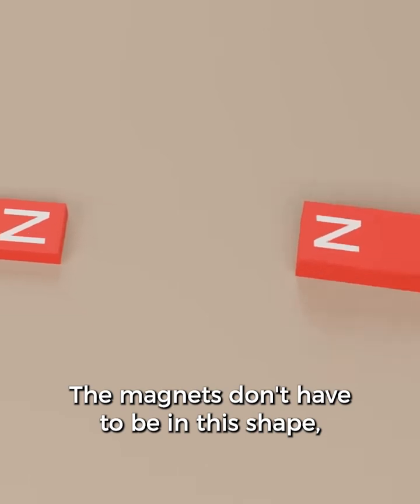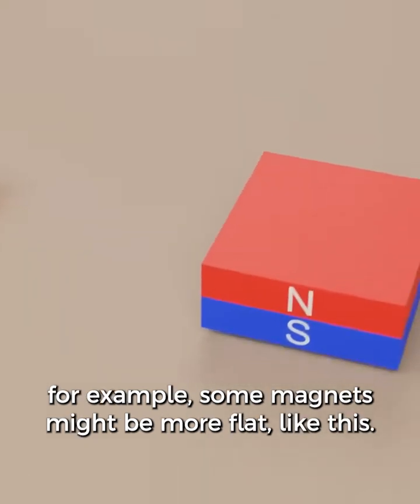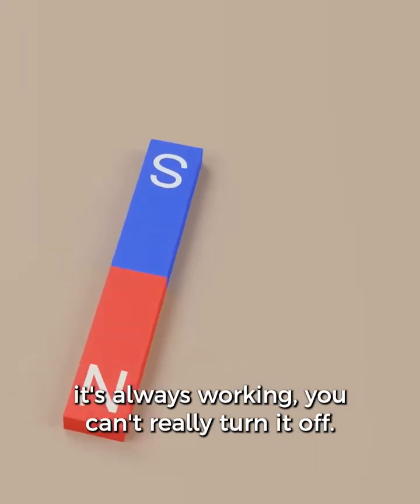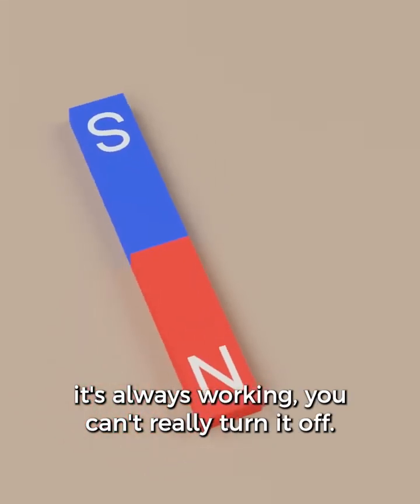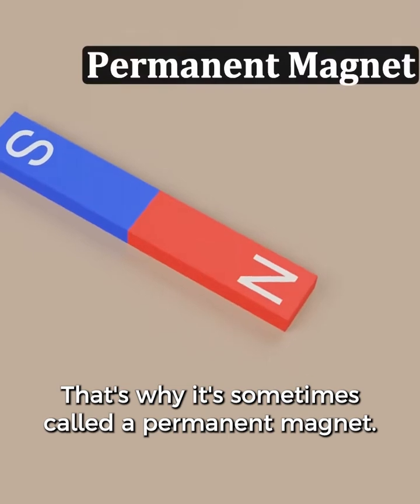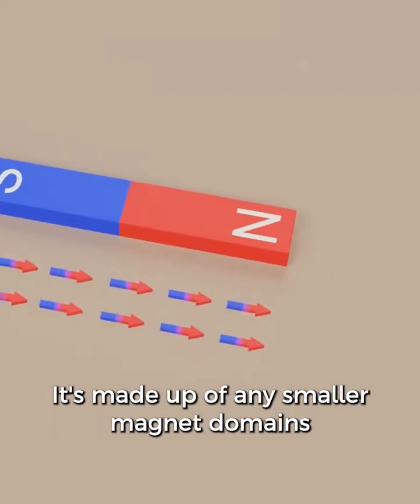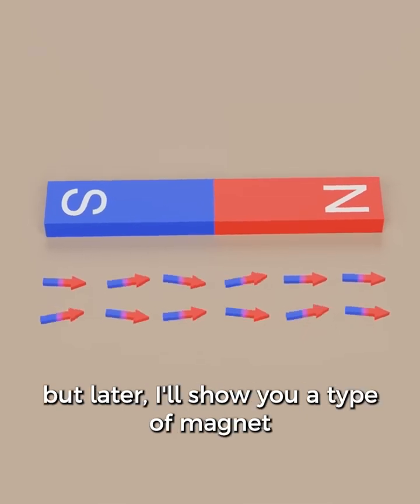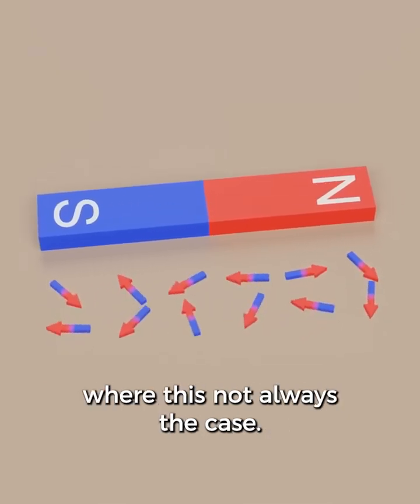Magnets don't have to be in this shape. For example, some magnets might be more flat like this. You can think of this magnet as always on. It's always working. You can't really turn it off. That's why it's sometimes called a permanent magnet. It's made up of many smaller magnetic domains that are lined up in the same direction. But later, I'll show you a type of magnet where this is not always the case.